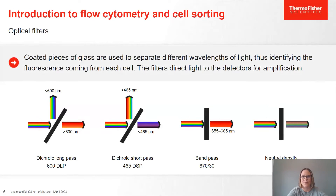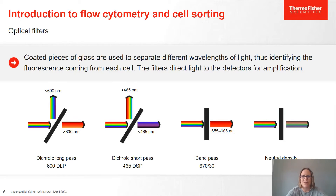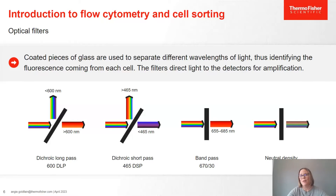To separate that light, we use optical filters — coated pieces of glass that separate the light into different wavelengths and steer it to the detectors. There are four main types of filters in flow cytometry: a dichroic long pass, which lets some light pass through and reflects others; a dichroic short pass, which lets shorter light pass through and reflects the others; a band pass, which lets a specific band of light come through; and a neutral density, which generally dims everything down — kind of like sunglasses for that signal. The same process of filtering and bouncing light is used for both scattered and fluorescent light, directing the light to detectors for amplification and processing.